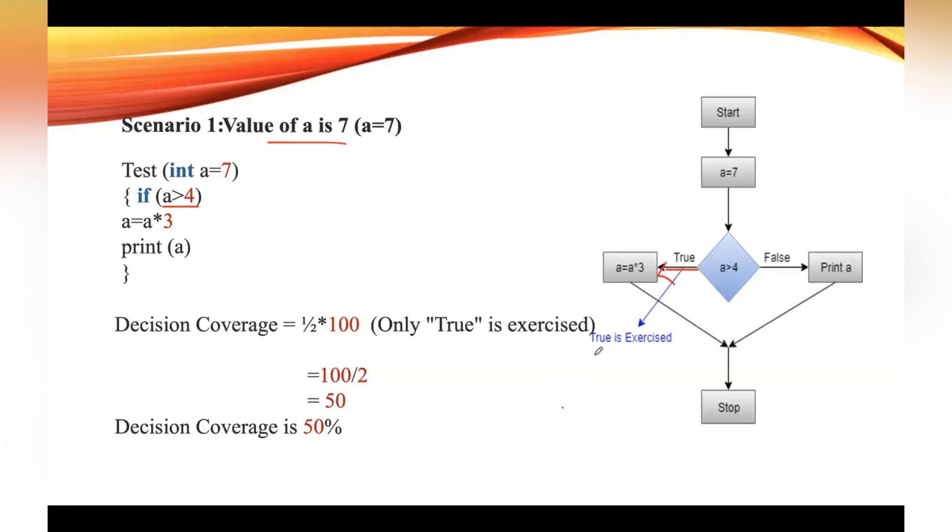Since the condition is true, only the true part is exercised. You can calculate the decision coverage like this: number of decision outcomes exercised, only one decision outcome, that is the true part. So 1 divided by total number of decisions (true and false), so here we are not executing the false part. So 1 by 2, multiply that with 100.